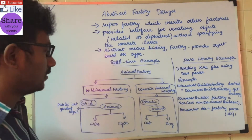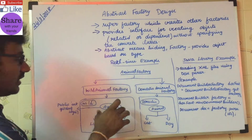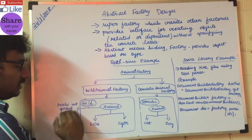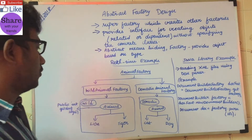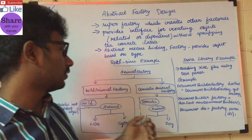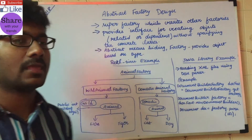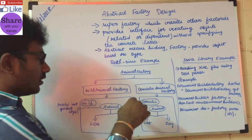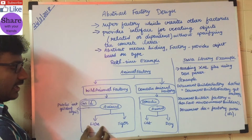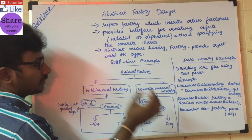That is why lion and tiger implement the Animal interface. In the Animal interface, all methods are public — for example, getNumberOfLegs(). Animals are lion, tiger, cat, and dog. Using the implementation classes, you will have Lion class, Tiger class, Cat class, and Dog class.